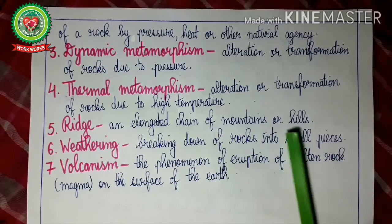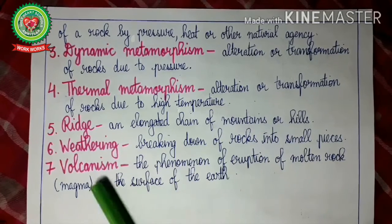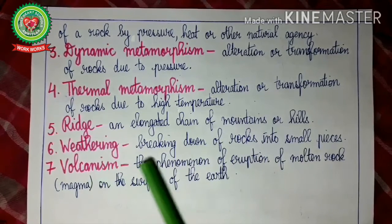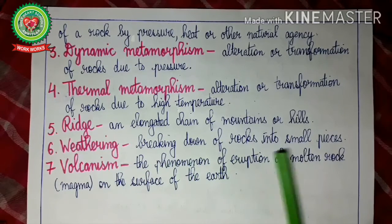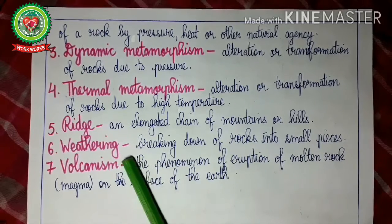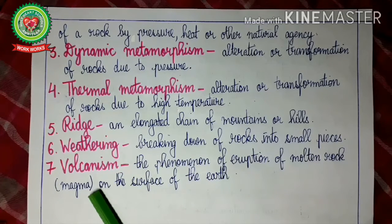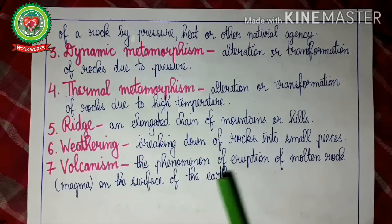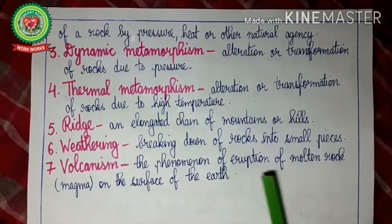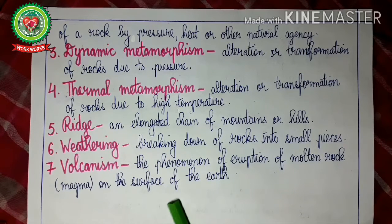Thermal metamorphism is the alteration or transformation of rocks due to high temperature. Ridge is an elongated chain of mountains or hills which has two or more peaks. Weathering is the breaking down of rocks into small pieces. Volcanism is the process or phenomenon of eruption of molten rock, that is magma, on the surface of the earth.